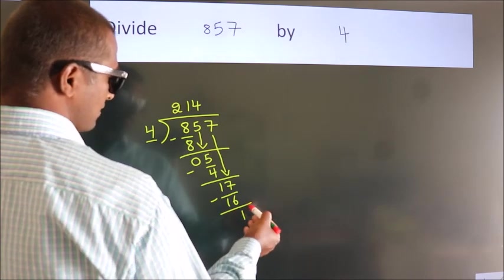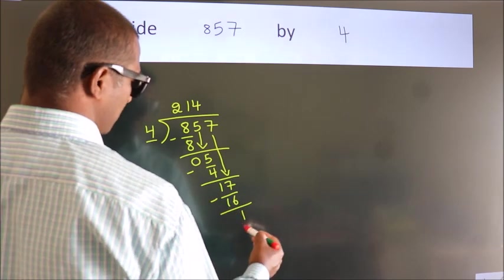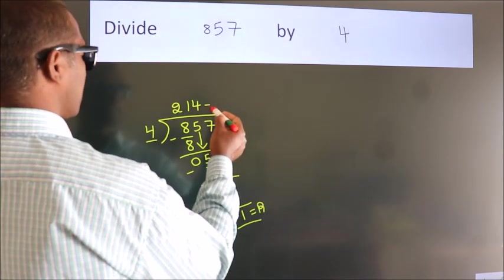After this, no more numbers to bring it down. So we stop here. This is our remainder. This is our quotient.